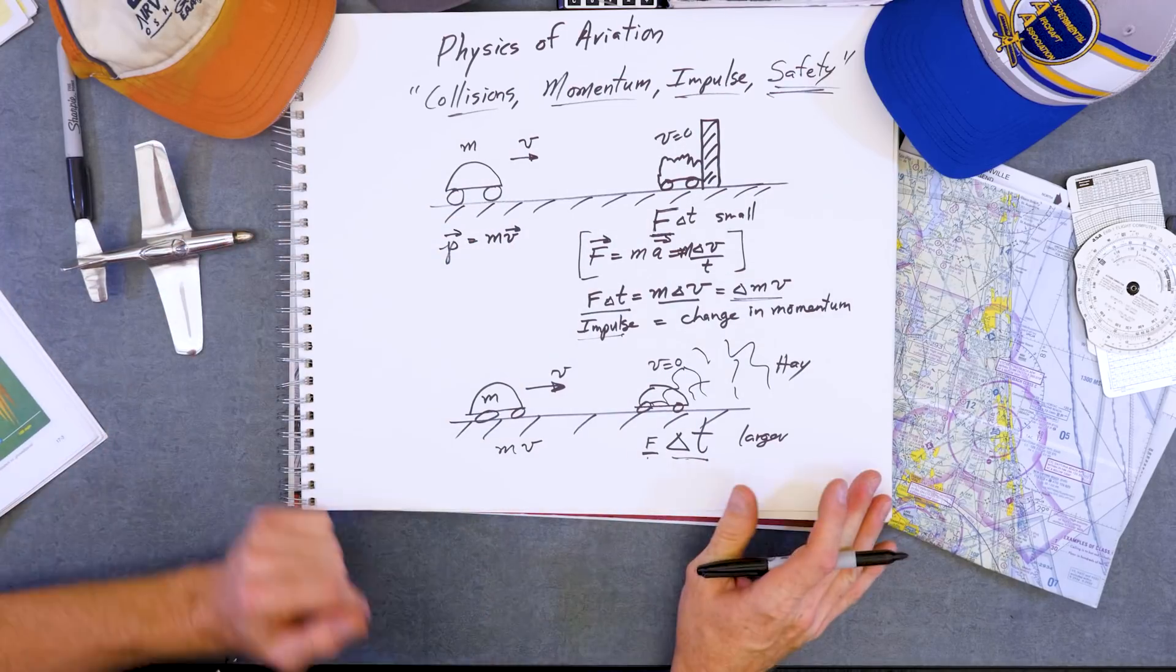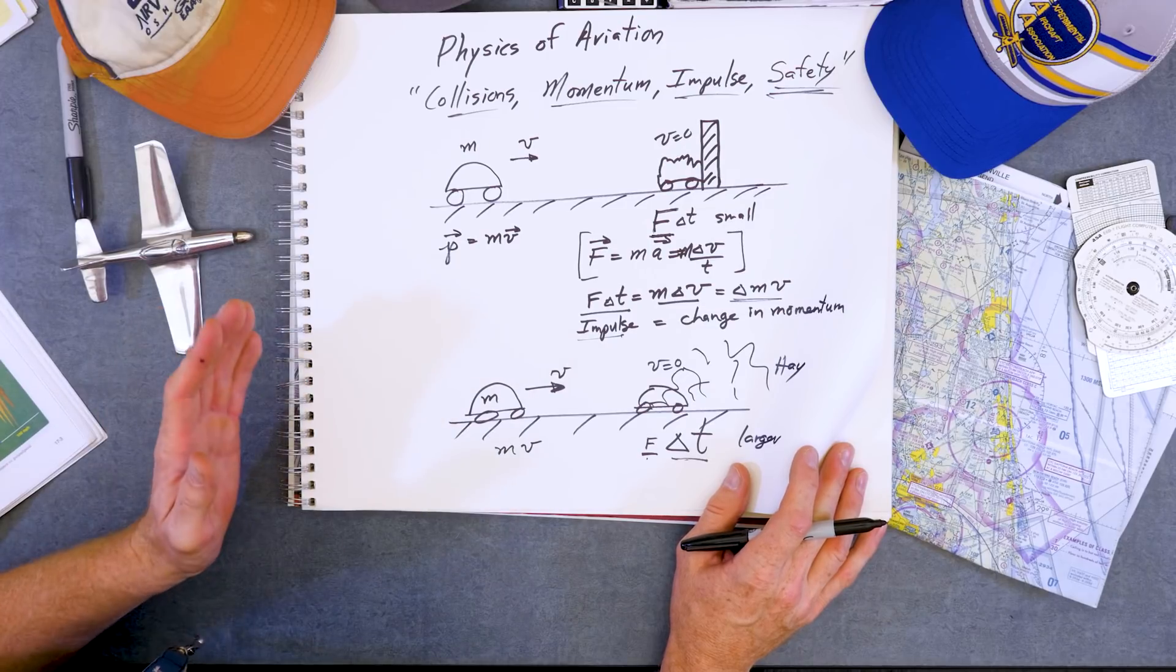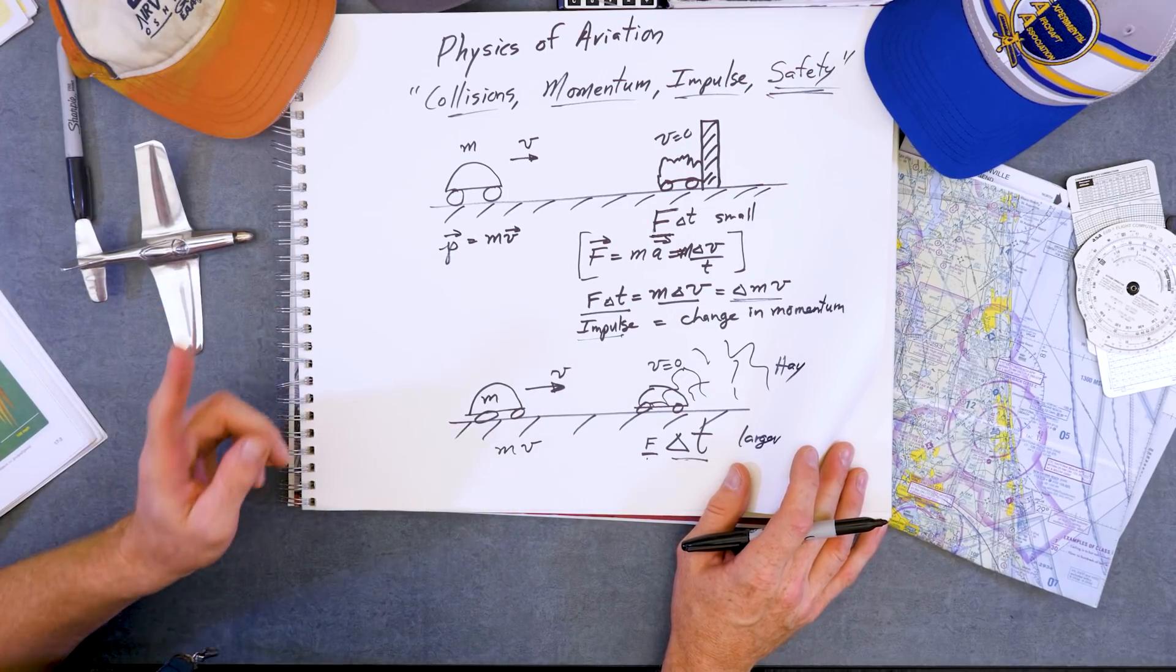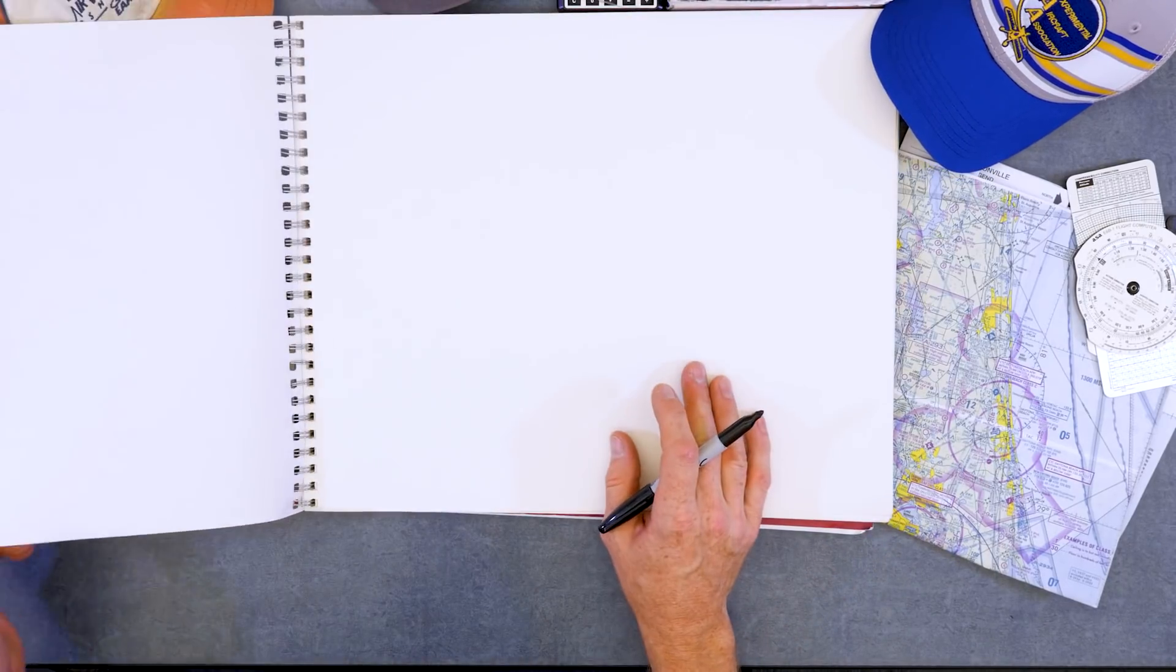So that's exactly what the FAA is talking about here. If you can find the wheat field or the corn field or slow down, lengthen that time of collision for a same given kinetic energy and given momentum, you can save lives. So let's look at some calculations now.